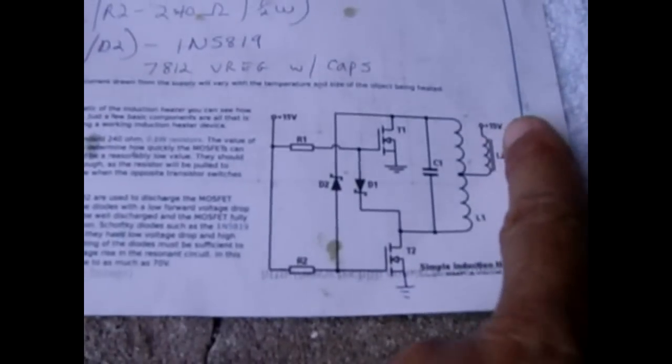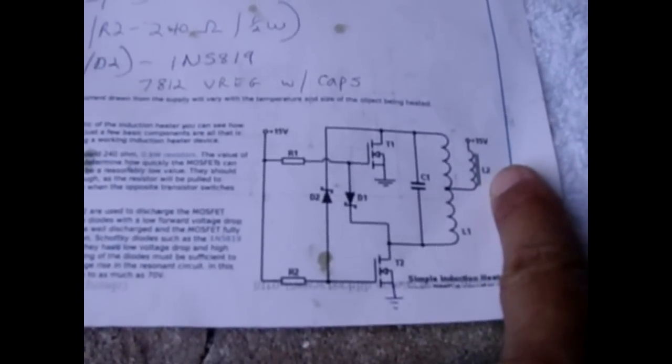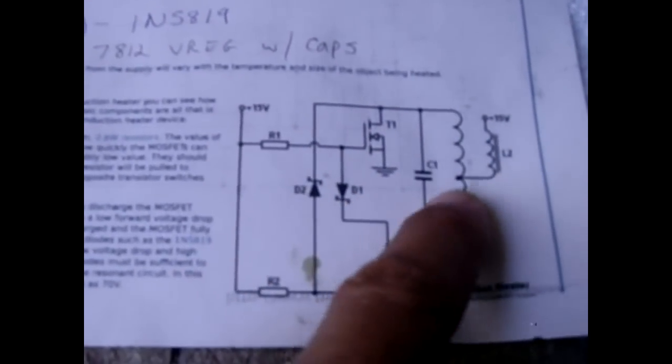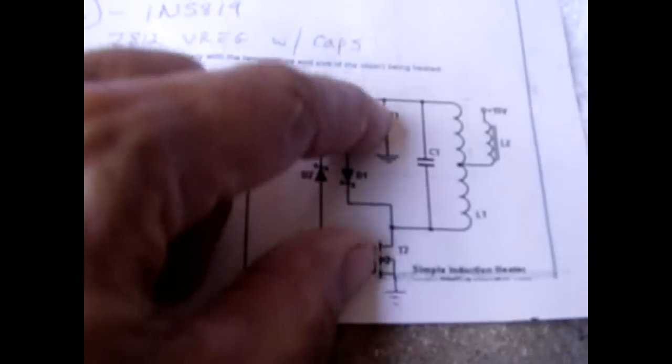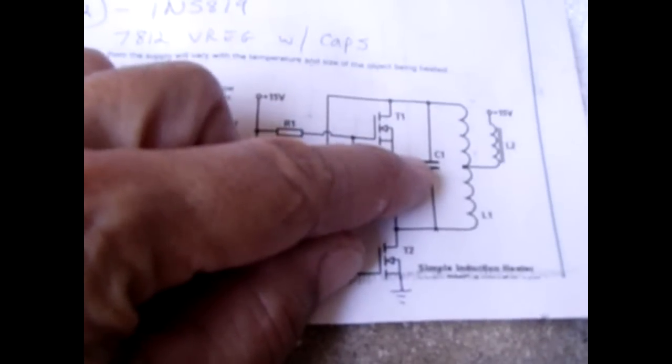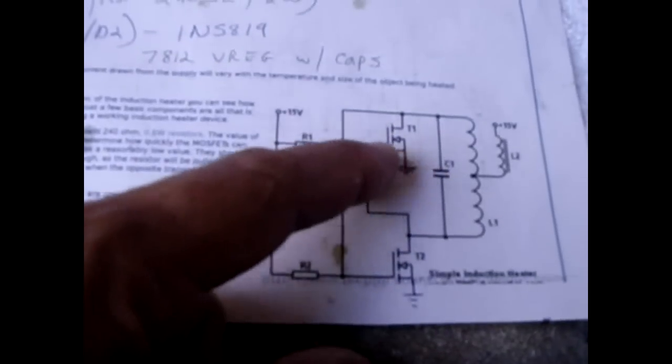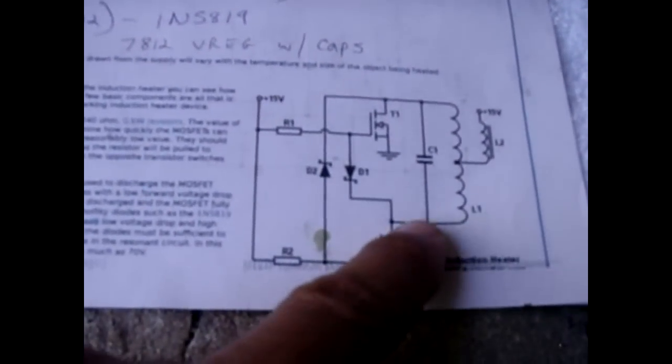Alright so there's the schematic. It's pretty simple. 15 volts or a little higher is fine. Flows into L2. Then it flows into the center tap of the coil that we wound. Each leg coming off of the coil that you wound has the capacitor across it. And then you have a MOSFET there going into one leg. Another MOSFET here tying into that leg.